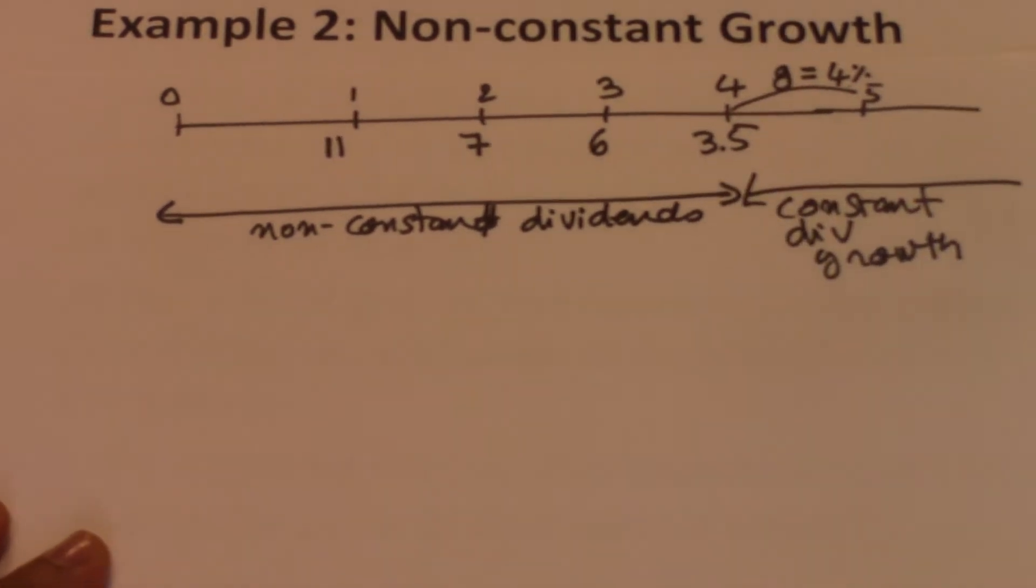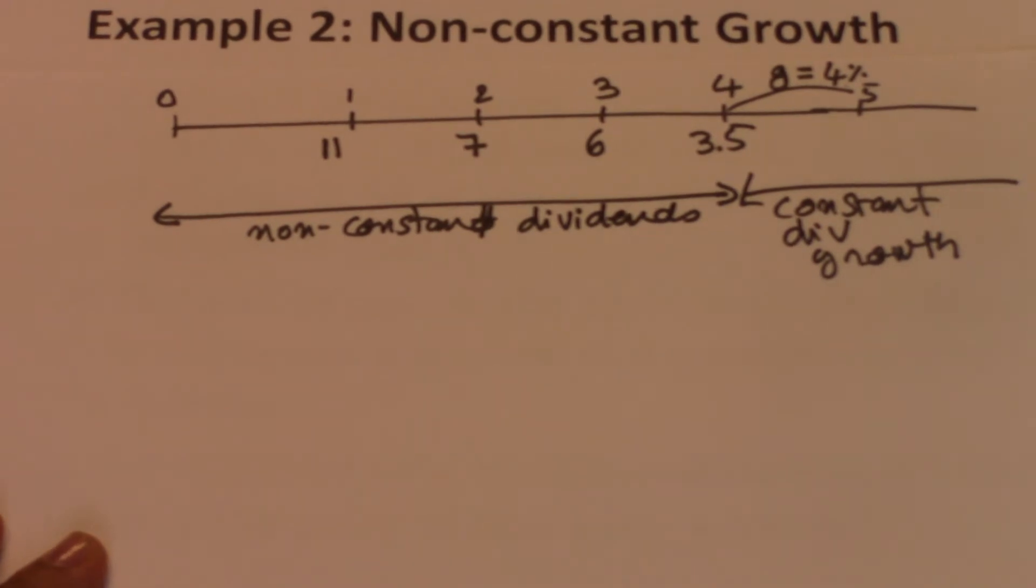Of course, we can determine D5, D6, D7, D8, and so on. However, that is time-consuming. We have a shortcut that we can use to be able to determine the value of those dividends.